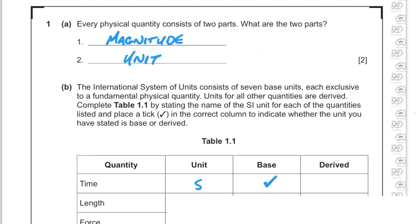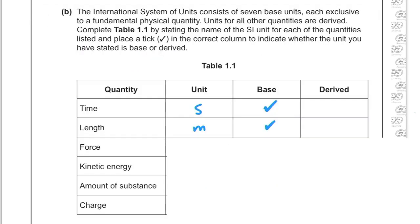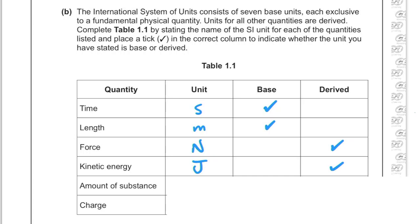Length is one of the base units; its unit is the meter, and it's a base unit. Force is measured in newtons and it is a derived unit — not one of the SI base units. Kinetic energy is measured in joules and is also a derived unit. Amount of substance is one of the SI base units, measured in moles. Charge is measured in coulombs but it's a derived unit.